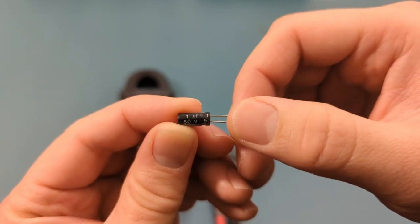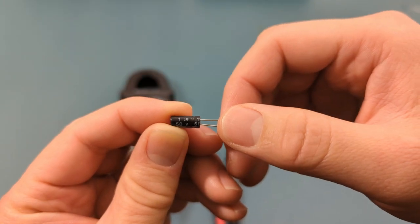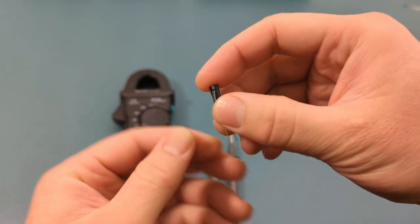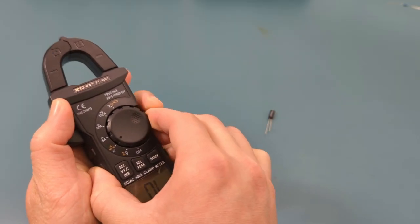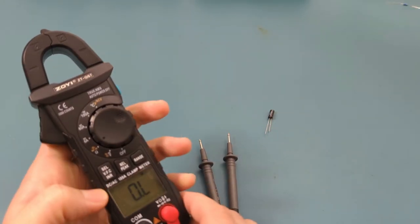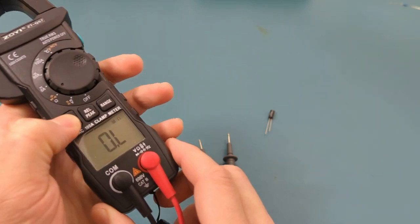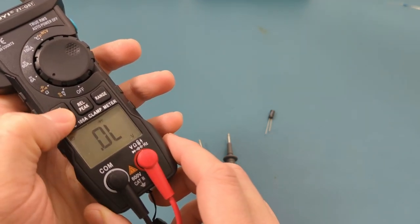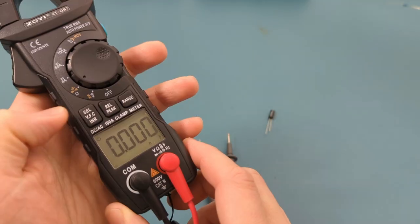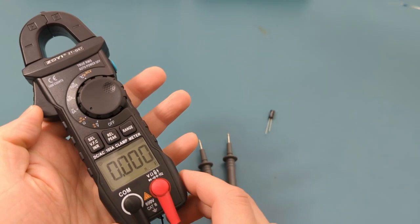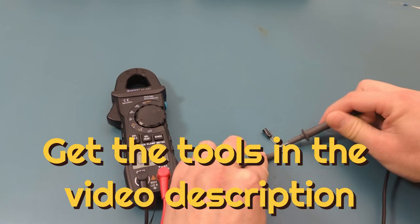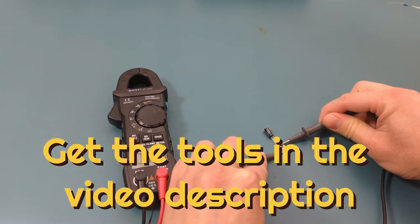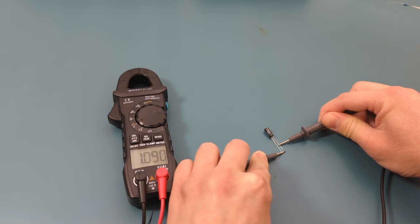The next test is to check the capacitance of this 1uF capacitor. Turn the dial to the resistance capacitance setting and toggle to the capacitance mode. The reading shows 1uF, which is what we expected.